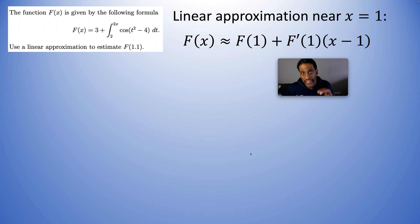y minus y1 is m times x minus x1. So f of x is approximately equal to the function at 1 plus the derivative at 1 times the quantity of x minus 1. If you move over the f of 1, you'll see y minus y1 equals m times x minus x1.